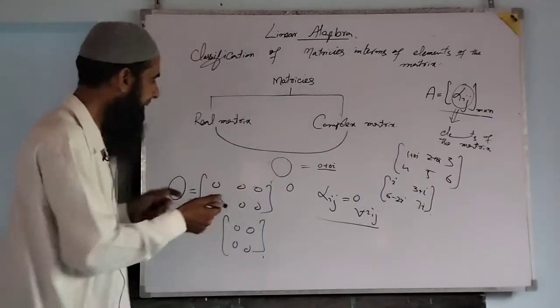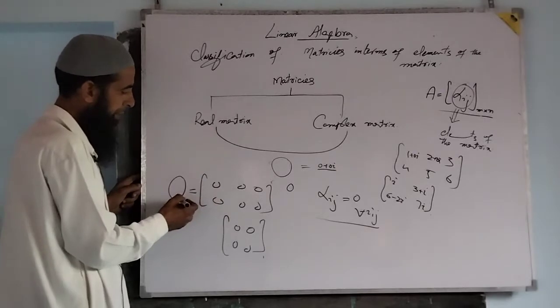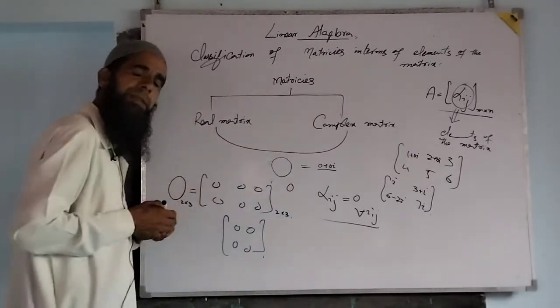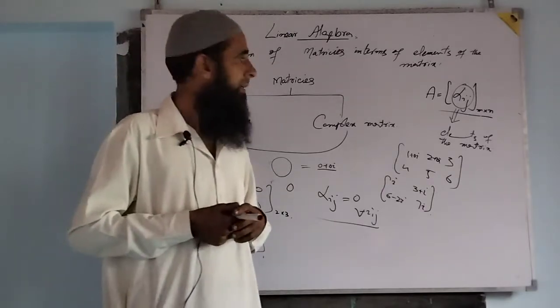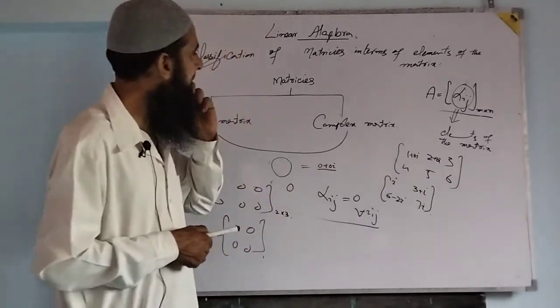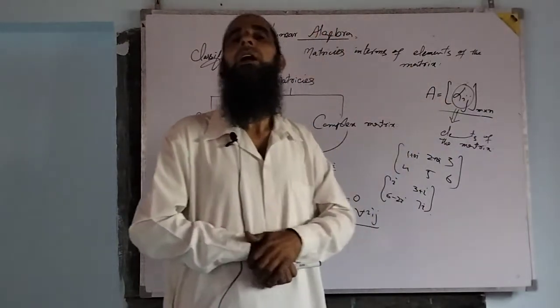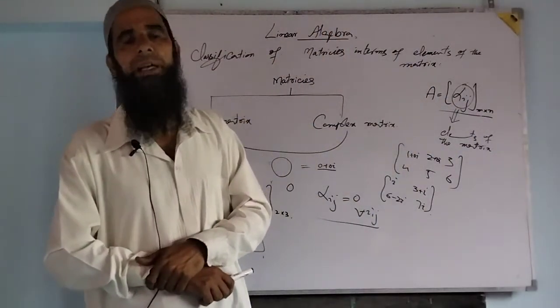The order depends upon the given matrix. Here the order is 2×3. This is the classification in terms of elements of a given matrix.